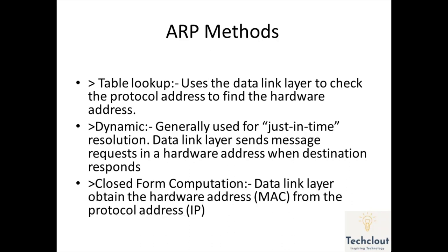The third method is closed form computation, where the data link layer obtains the hardware address (MAC address) directly from the protocol address. So these are the ARP methods, along with what ARP is, how ARP works, and ARP terminology.